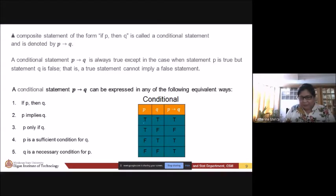So, how do we go on with the truth table of this? True implies true is true. True implies false is false. False implies true is true. False implies false is true. Meaning to say it will only be false if we have this. Ito lang. All the rest will be true. Pag implies.